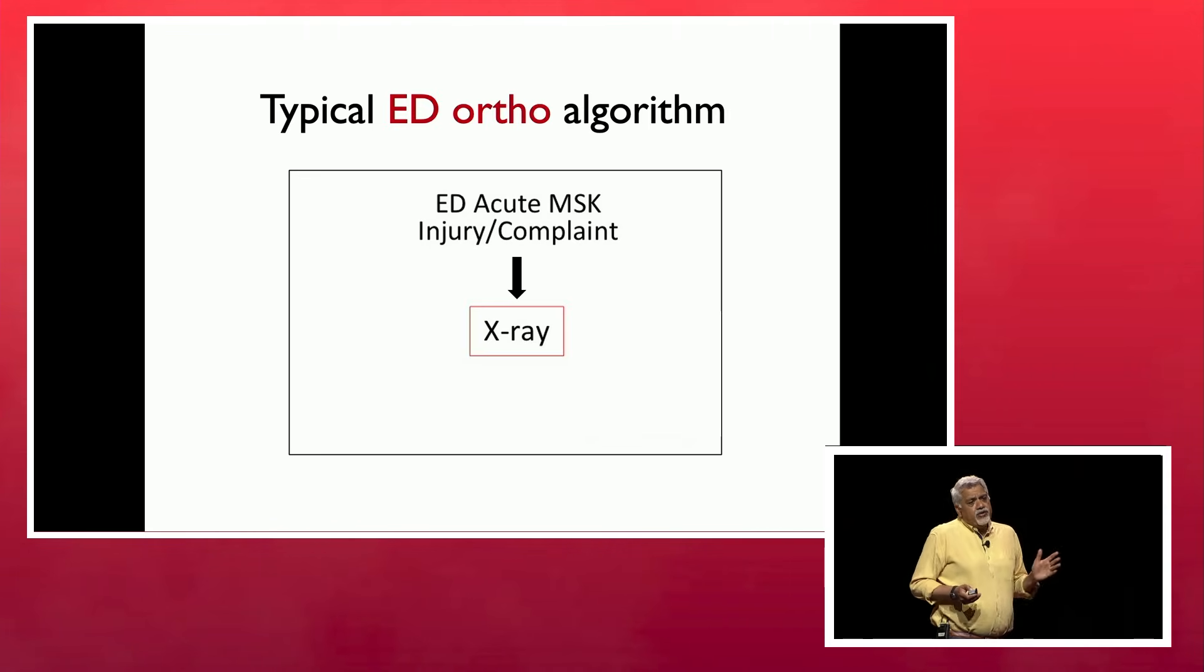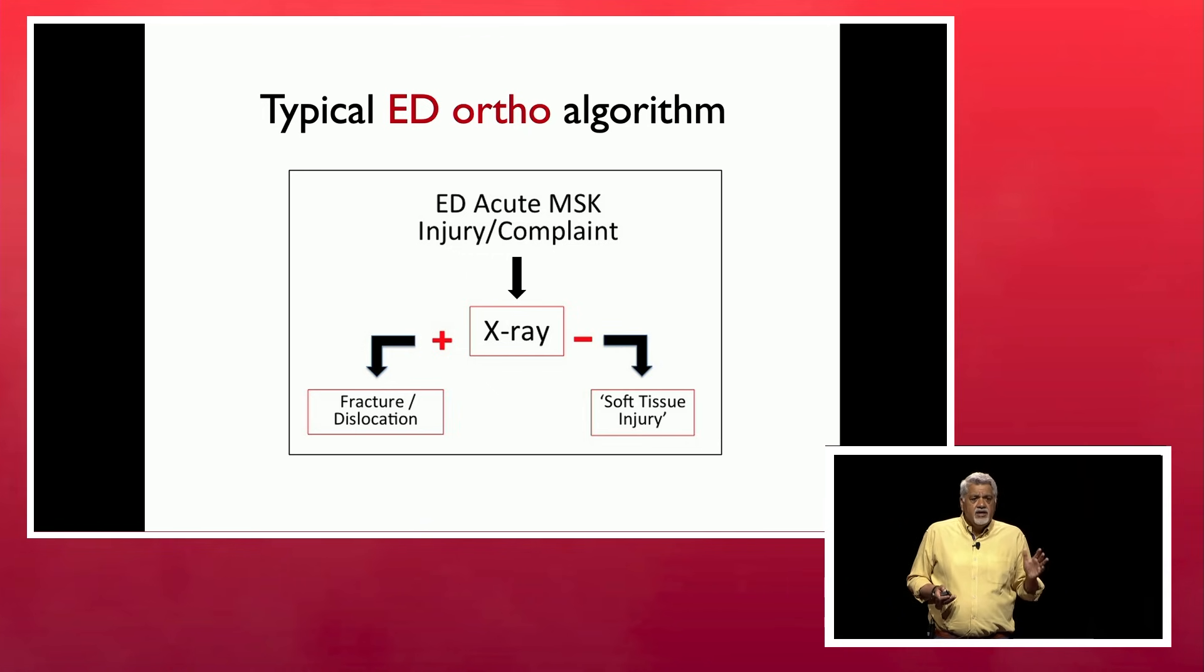So if I had an algorithm, I'm not a fan of algorithms. I don't think we think when we have algorithms so much, but if I had one after 12 years, you'd take an x-ray. If it's positive, they got a fracture or dislocation. If it's negative, they got a soft tissue injury, unless they have snuffbox tenderness, and if they have snuffbox tenderness, their diagnosis is now a clinical scaphoid fracture. This might look familiar to you.